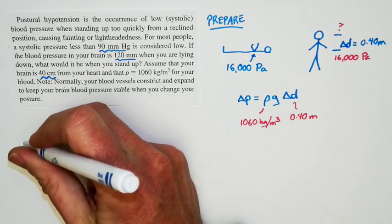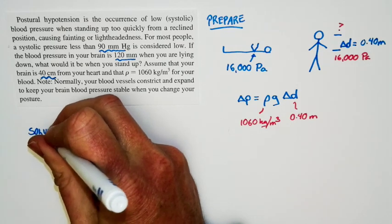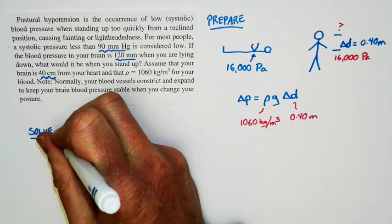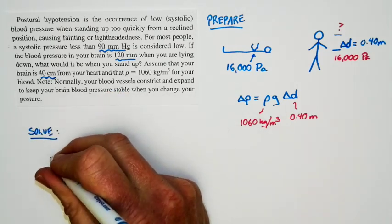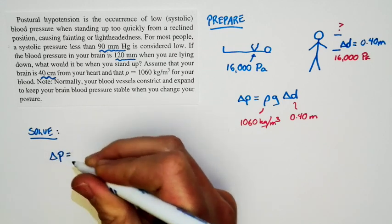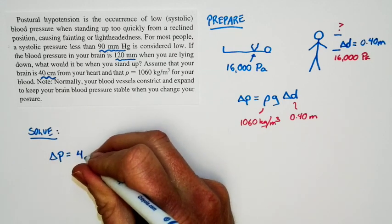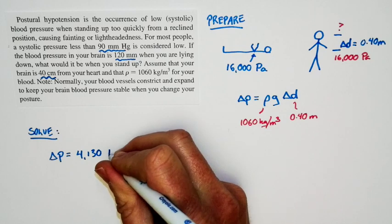And so our solution is basically this. We put numbers in, solve for the pressure difference. And if we do that, here's what we get. I get the difference in pressure is 4,130 pascals.